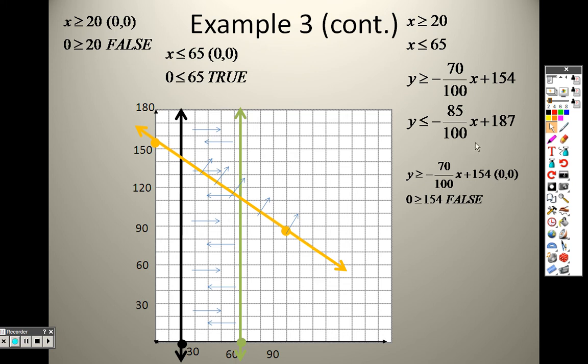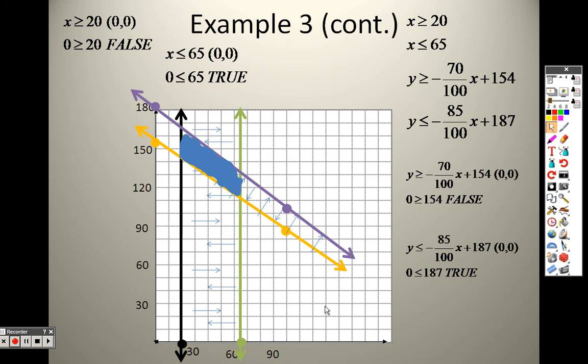Next up is 187. So 187 would be way up here. And then that means I'm going down 85 and over 100. And there's that line. When I go and plug in 0, 0 there, is 0 less than that? Yep, it's true. Which means it's this area right in here. See where there's a whole bunch of arrows in that kind of like parallelogram shape right there. That little section is your answer.